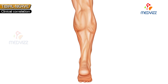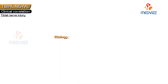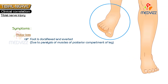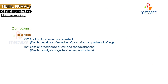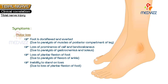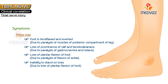For clinical correlation, tibial nerve injury is more commonly caused by lacerated wounds in the popliteal fossa or posterior dislocation of the knee joint. Motor symptoms include: the foot is dorsiflexed and everted due to paralysis of muscles of the posterior compartment of the leg; loss of prominence of the calf and tendo calcaneus due to paralysis of gastrocnemius and soleus; loss of plantar flexion of the foot due to paralysis of flexors of the ankle; and inability to stand on toes mainly because of loss of plantar flexion.